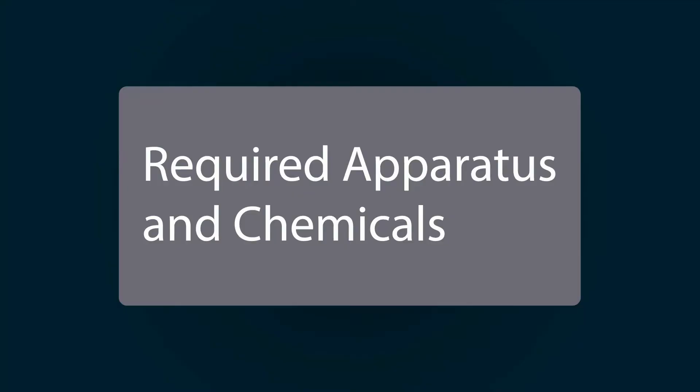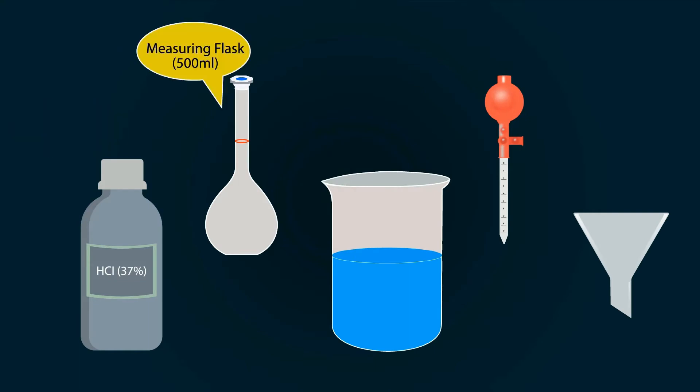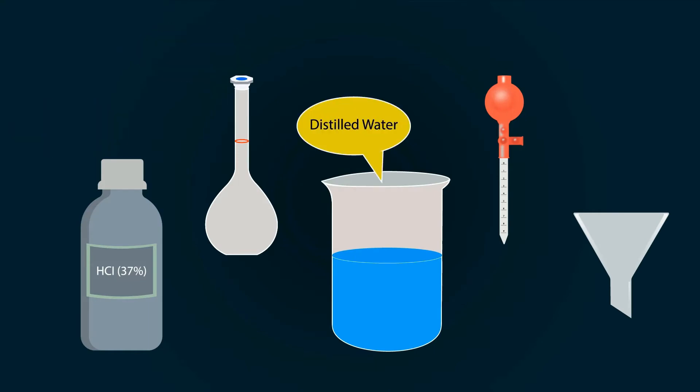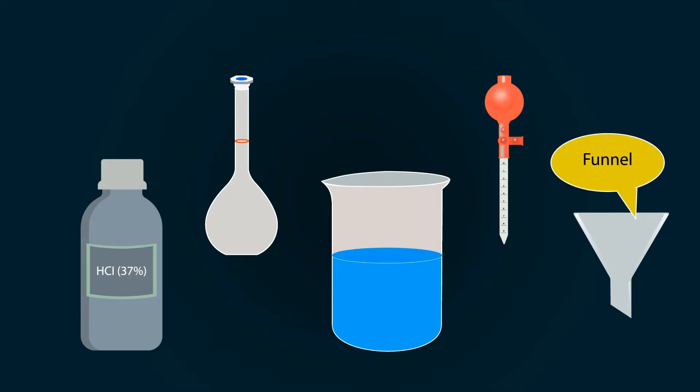The required apparatus and chemicals include hydrochloric acid, a volumetric flask of 500 milliliters, distilled water in a beaker, a pipette, and a funnel. First of all,